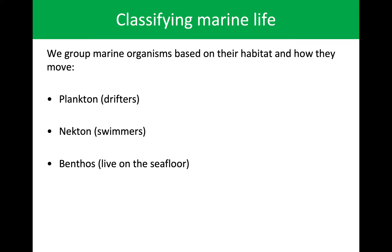Now classifying marine life — we're concerned about three overarching groups. The first is plankton, which is a fancy term for a drifter. These things are present in the environment and can somewhat move around, but they don't move under their own power — they're at the mercy of the ocean currents, and wherever the currents take them is where they end up.